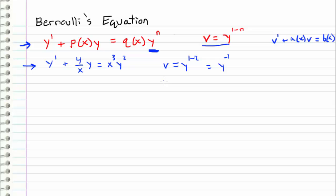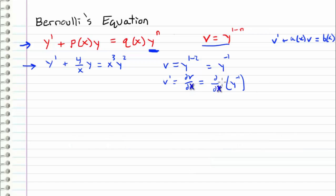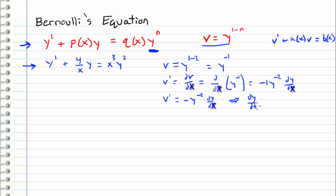Now let's find an expression for v prime, which is really just dv/dt. We differentiate v with respect to t — that is, d/dt of y to the negative 1. Since y is a function of t, we have to use the chain rule, and what we get is negative 1 times y to the negative 2 power, times dy/dt. So v prime equals negative y to the negative 2 times dy/dt.